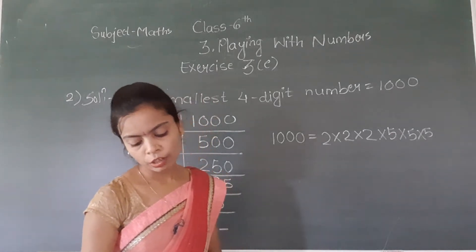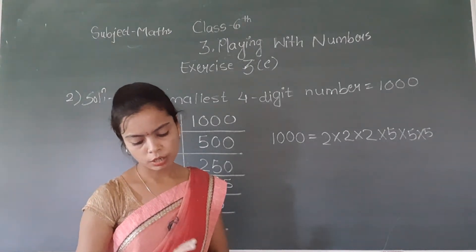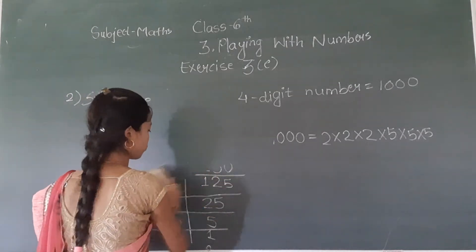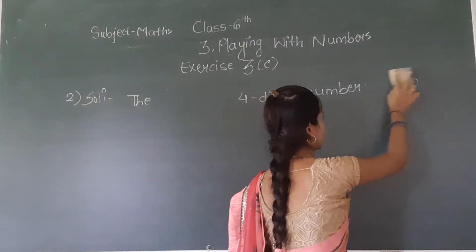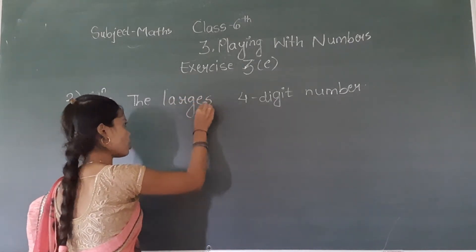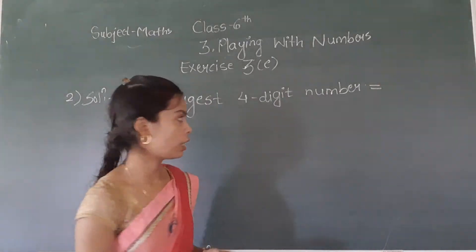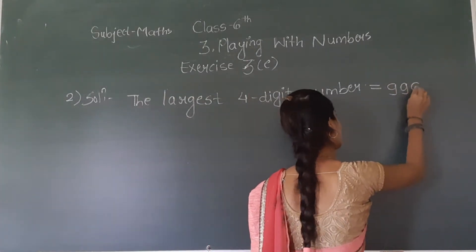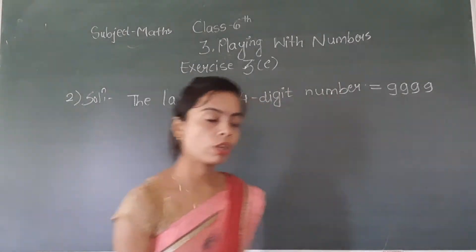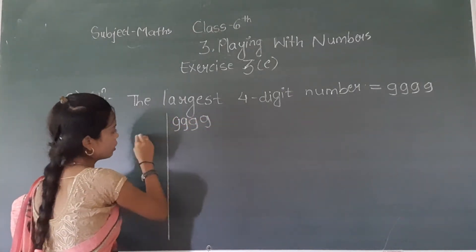After that, in the same question we have to find out the prime factorization of the largest four-digit number. So what is the largest or the greatest four-digit number? The largest four-digit number is 9999.